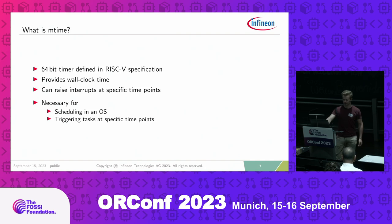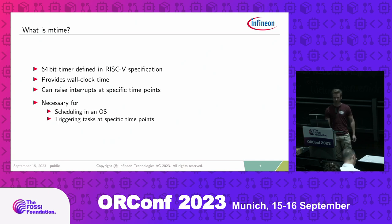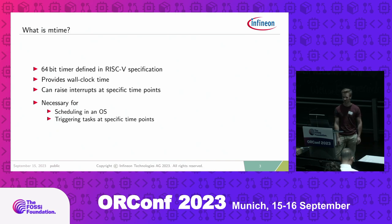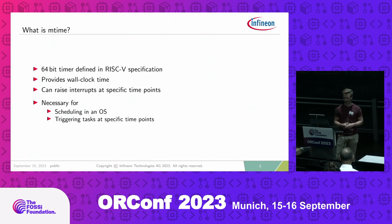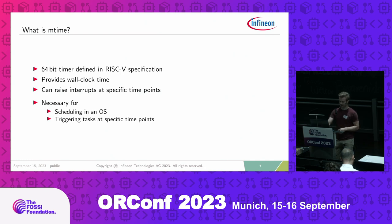mTime is a 64-bit timer defined in the RISC-V specification. It provides a wall clock time for the system, so you can get a timestamp using the read time instruction. It can also raise an interrupt at specific time points. It's necessary for scheduling an operating system or triggering tasks at specific time points, like reading sensor values at a specific time interval.